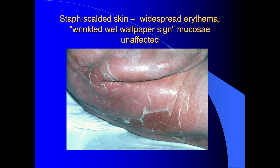Rarely, a distant staphylococcal infection can produce large amounts of this epidermolytic toxin, causing widespread separation within the epidermis and superficial blistering — this is called staphylococcal scalded skin syndrome. This lady had recently had coronary artery surgery and developed a staphylococcal sternotomy wound infection. The infection produced large amounts of epidermolytic toxin; her skin went bright red with superficial blistering and peeling of the outer epidermis. This condition tends to occur more commonly in children; when it occurs in adults, it's often associated with immunosuppression.